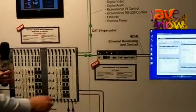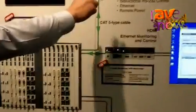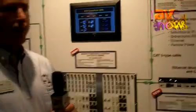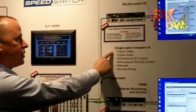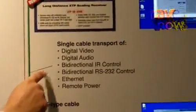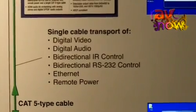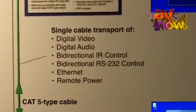Now connectivity from the boards of the matrix switcher to the remote endpoints is achieved on one single CAT5 cable. On one cable, we can transmit digital video, digital audio, bi-directional IR control, bi-directional RS-232 control, ethernet, and remote power.